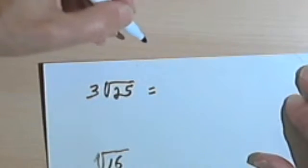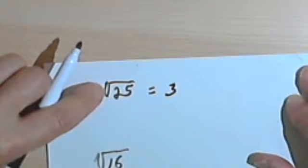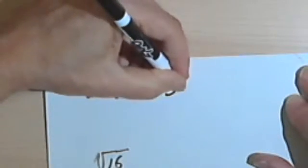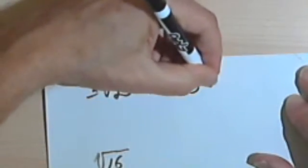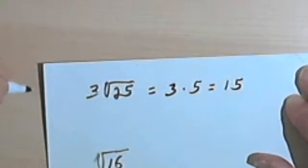So the square root of 25 is 5, and it's going to be 3 times whatever is under the radical sign, whatever the square root of 25 is, which is 5. So this is 3 times 5. And 3 times 5 is going to give me 15.